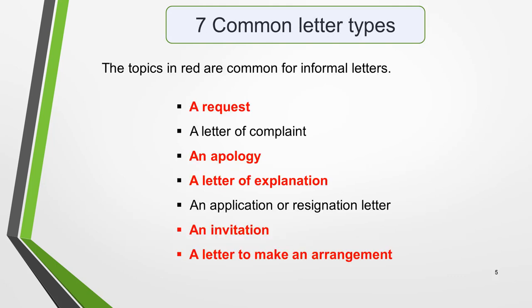Your general writing task 1 question will be on one of seven topics. The topics highlighted in red are the ones you're most likely to get for an informal letter. These are: a request, an apology, a letter of explanation.